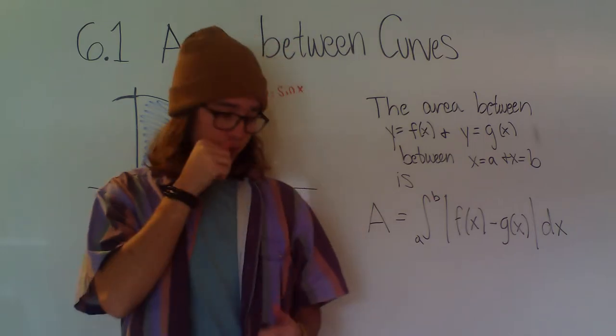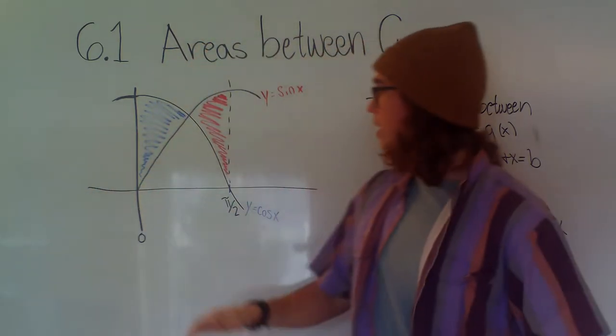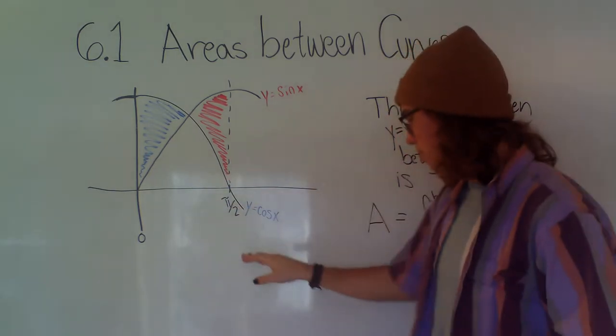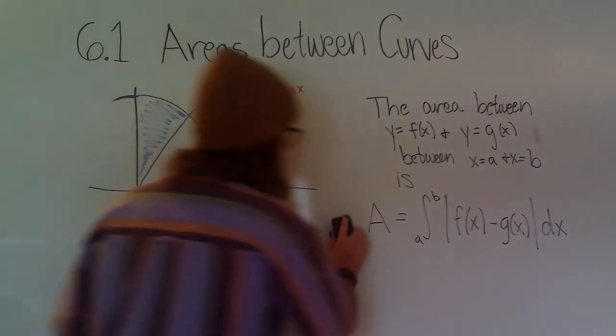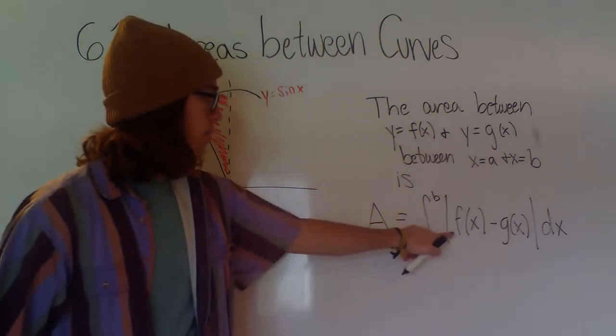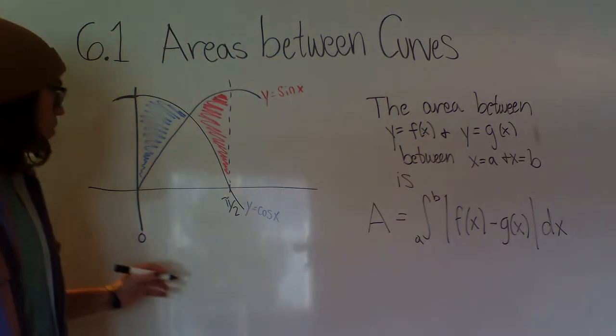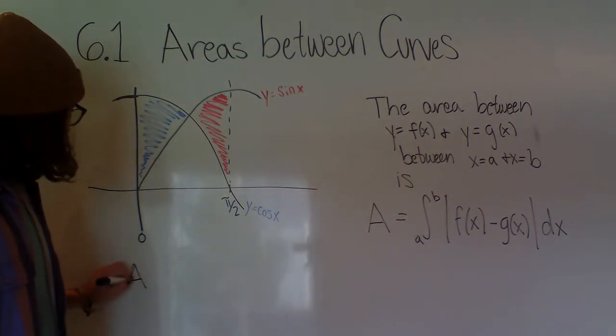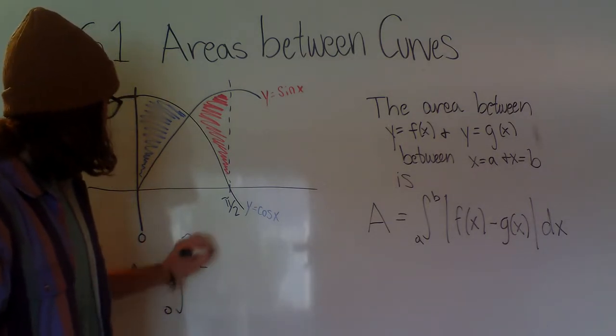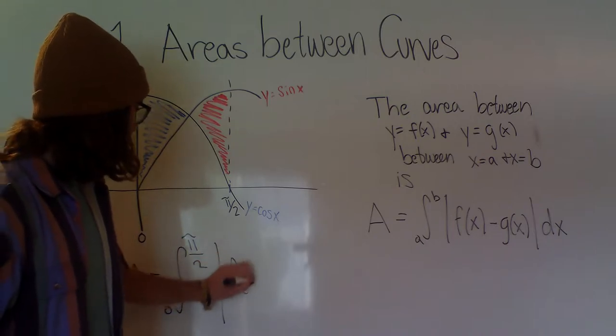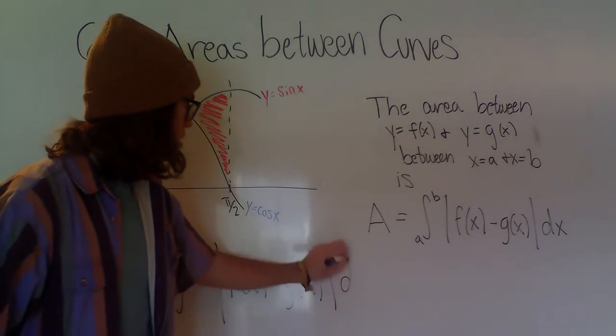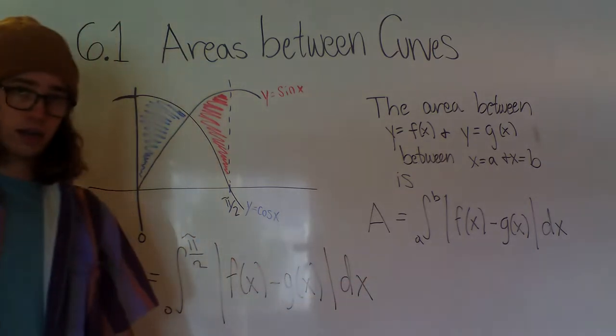So now let's go through this problem and let's actually find the area between y equals cosine of x and y equals sine of x from 0 to pi over 2. We know we're going to have to use the area is equal to integral from a to b of absolute value of f of x minus g of x dx. So we can start with that and we can say area is equal to integral from 0 to pi over 2 of absolute value of f of x minus g of x dx. Never forget the dx.